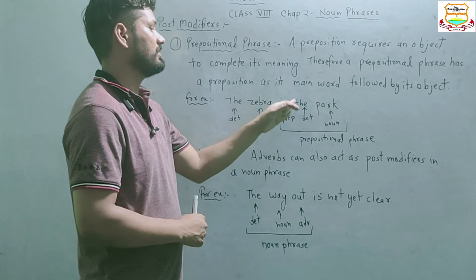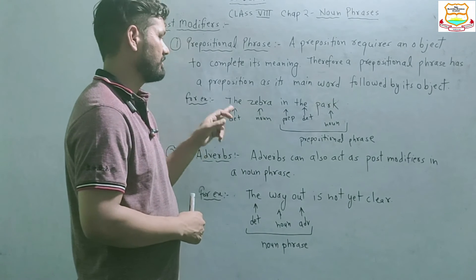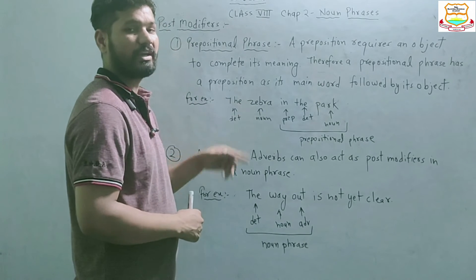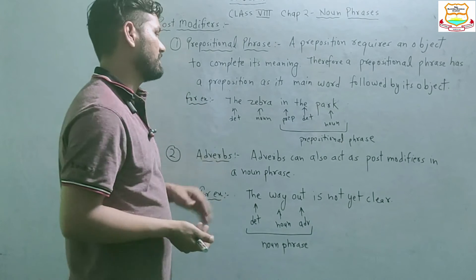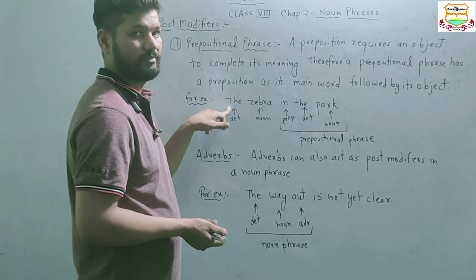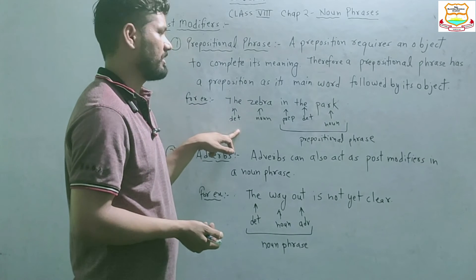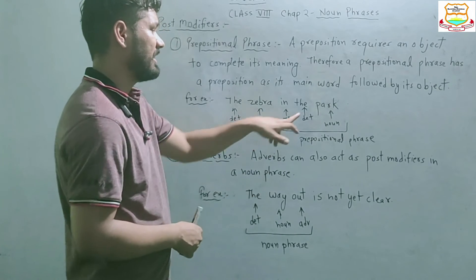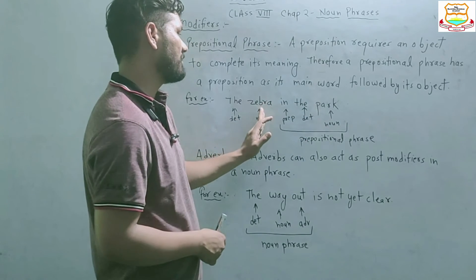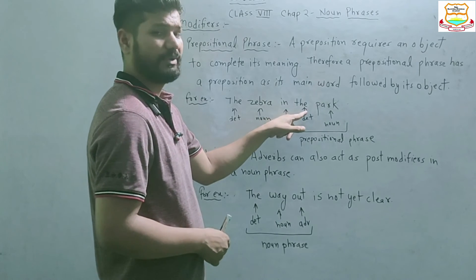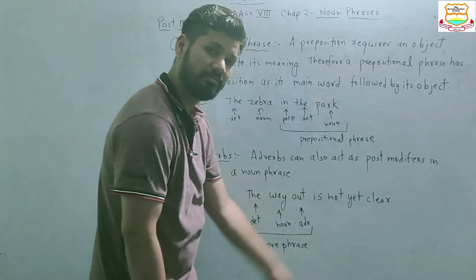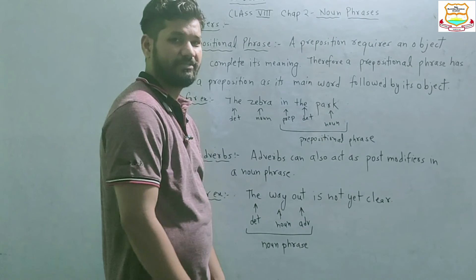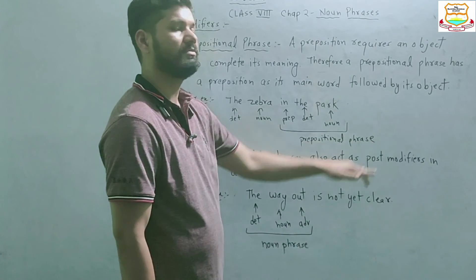For example, 'the zebra in the park'. Here, 'the' is a determiner acting as a pre-modifier to 'zebra'. The modifiers change according to their position. This 'the' before 'zebra' is the pre-modifier because it comes before the noun 'zebra'. But in 'in the park', 'the' also appears — though it is a determiner, it comes after the noun 'zebra' and behaves as part of this prepositional phrase post-modifier. So 'in the park' acts as the post-modifier, which we call a prepositional phrase.